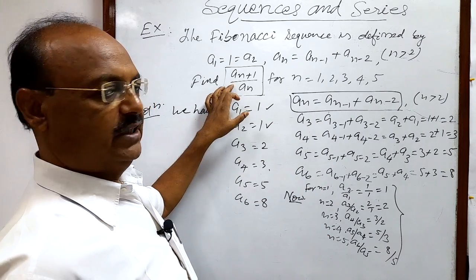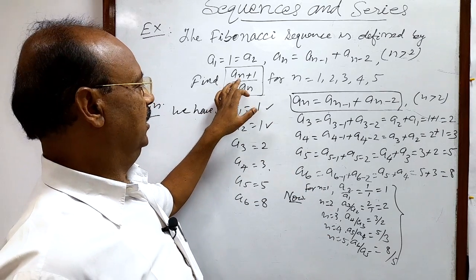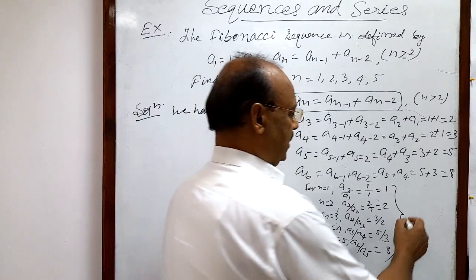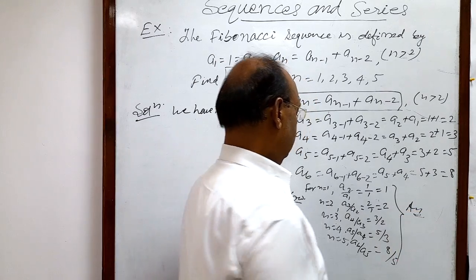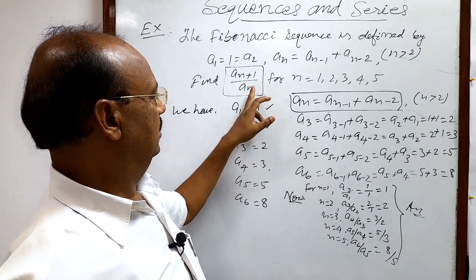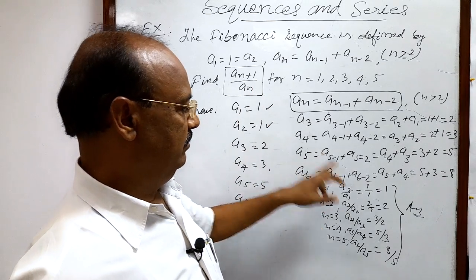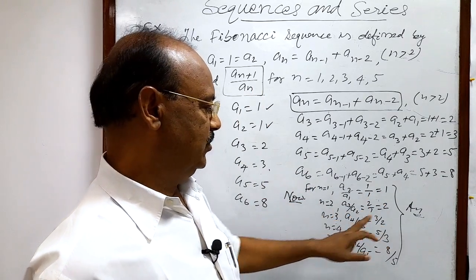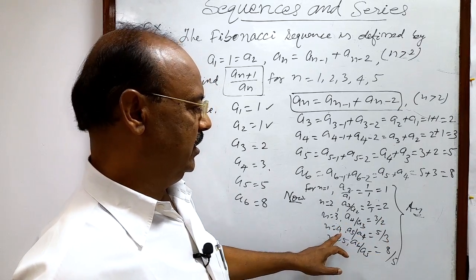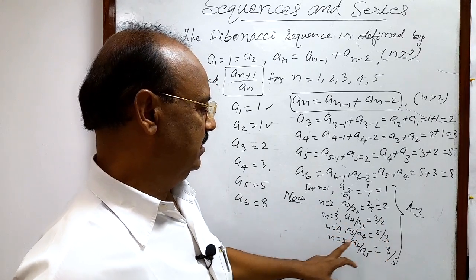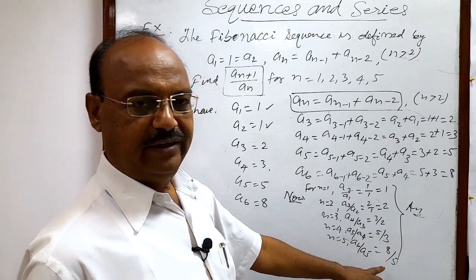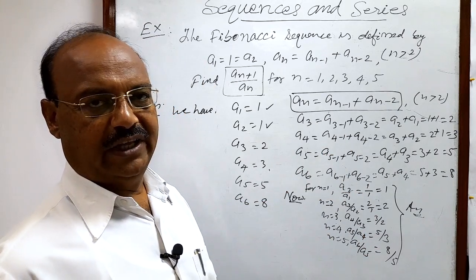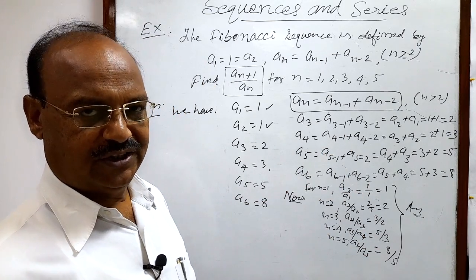So these are the answers for n = 1, 2, 3, 4, 5 for the expression a(n+1) / a(n): for n=1 the value is 1, for n=2 it is 2, for n=3 it is 3/2, for n=4 it is 5/3, and for n=5 it is 8/5. A very interesting and important question. Thank you very much for watching this video.